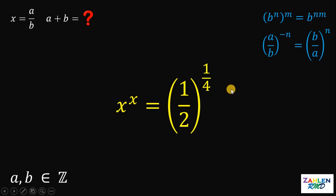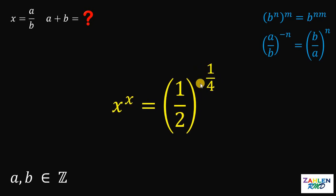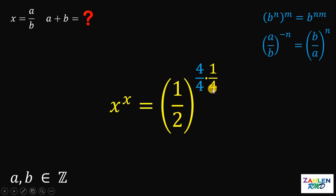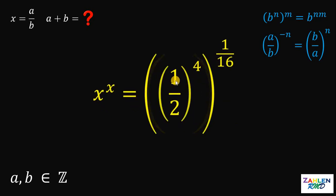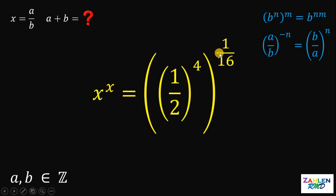Here's the trick to answer this question. What we're going to do is multiply the exponent 1 fourth by 1, or simply 4 over 4. We will multiply the denominator but not the numerator 4. This gives us 4 times 1 over 16. Now, using again the law of exponents — b raised to n times m is equivalent to b raised to n raised to the power of m — we apply this in reverse. Therefore, the right-hand side can be written as 1 half raised to 4, raised to 1 over 16.